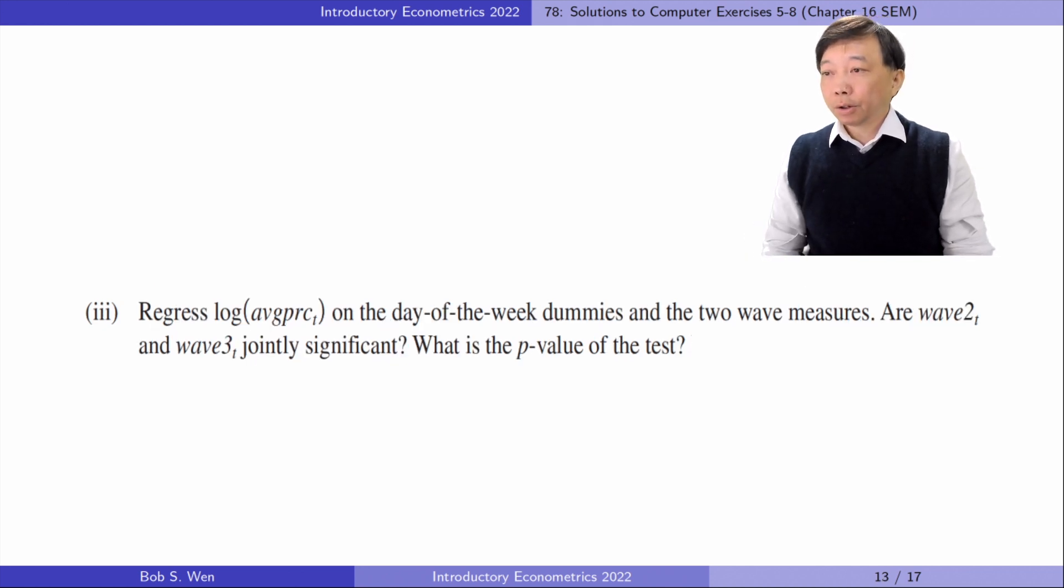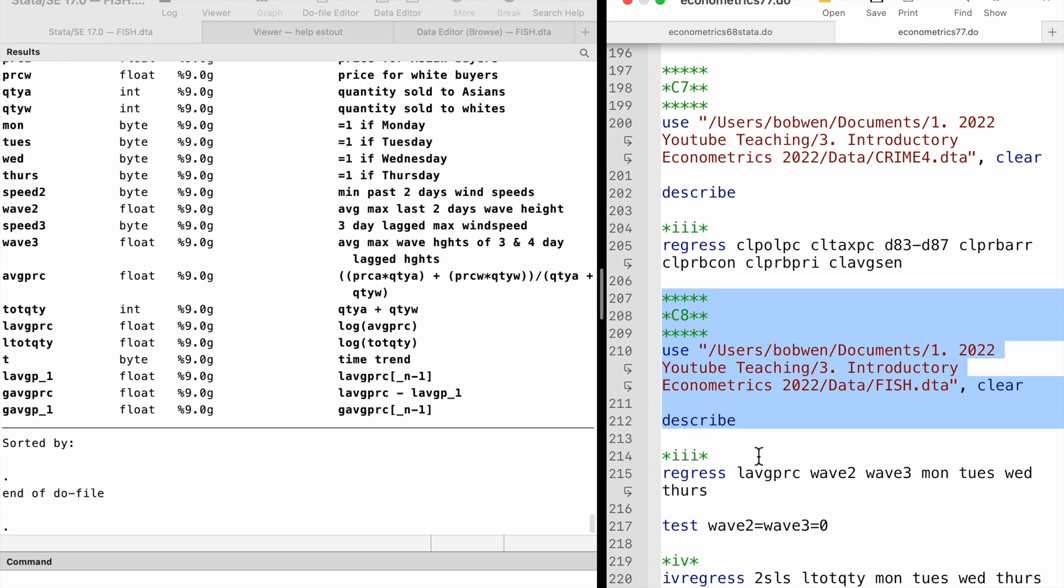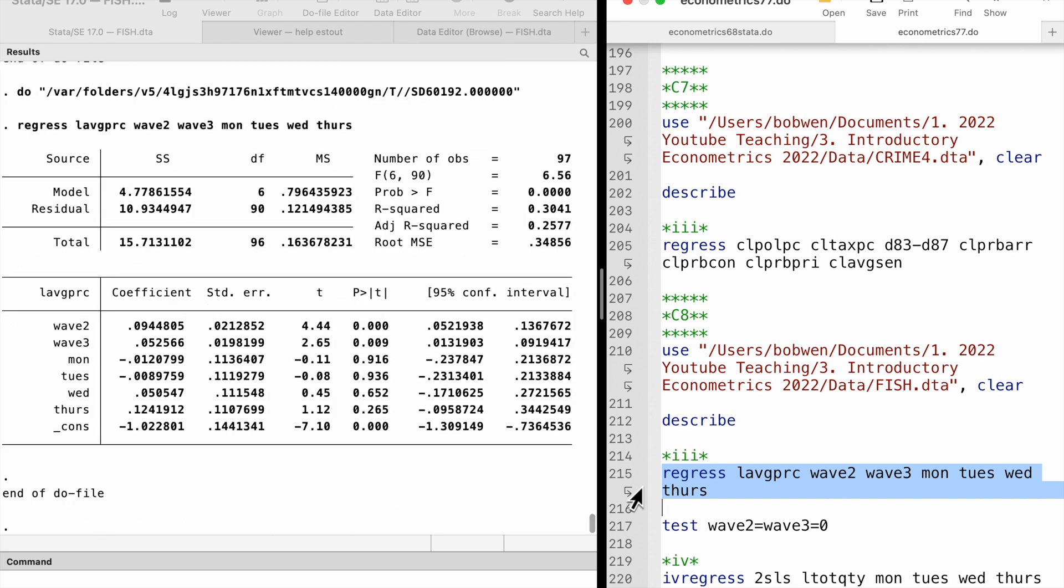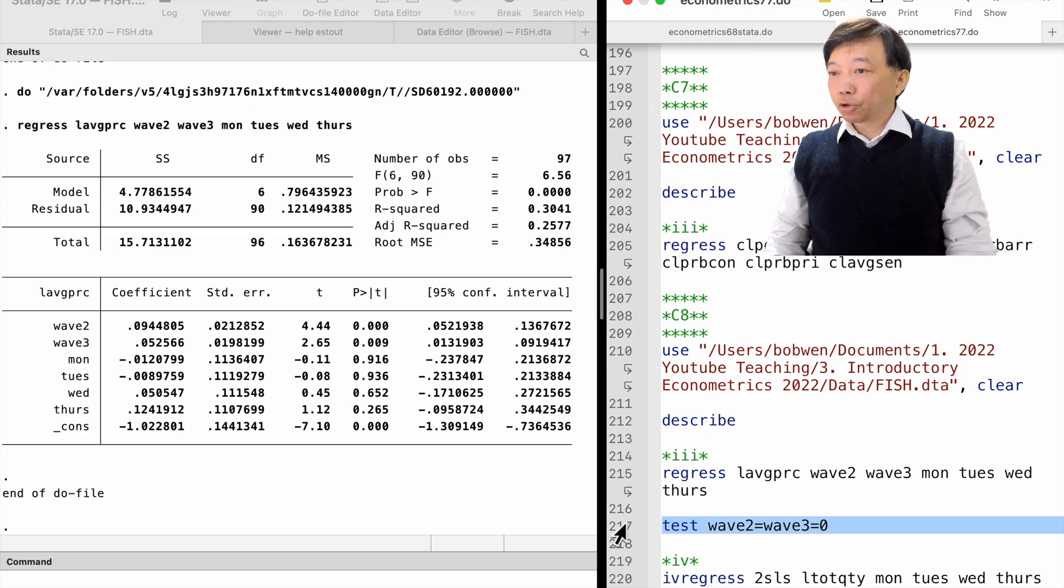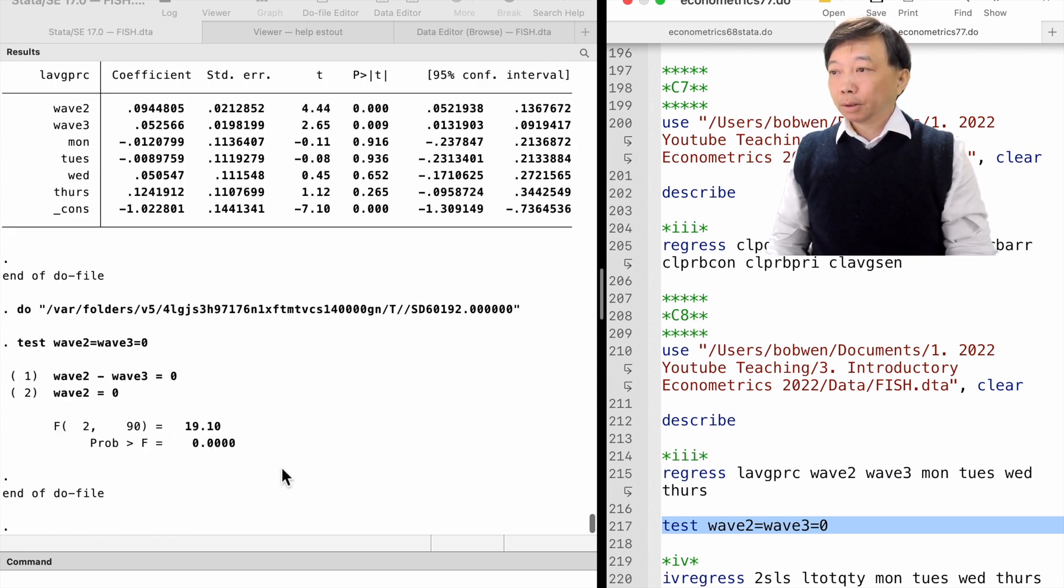In part 3, regress log average price on the day of the week dummies and the two wave measures. Are the wave measures variables jointly significant? What is the p-value of the test? The F statistic for the joint significance is 19.10. The p-value is 0 to 4 decimal places. The two wave variables are sufficiently correlated with the endogenous price variable.